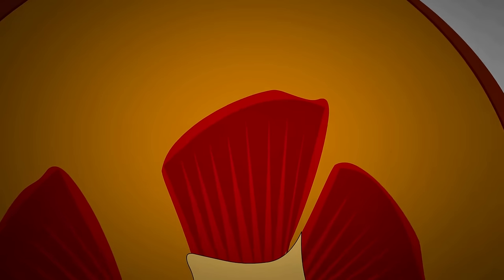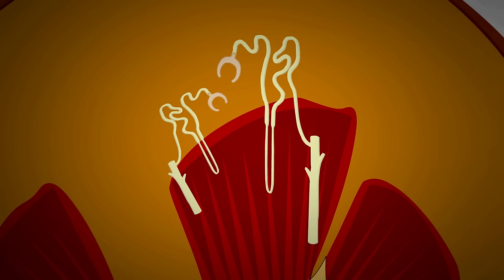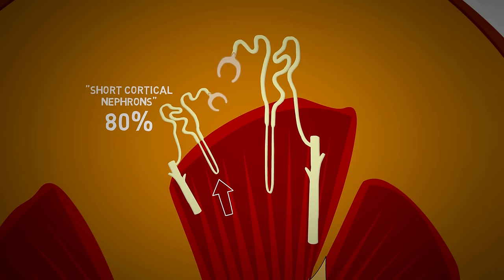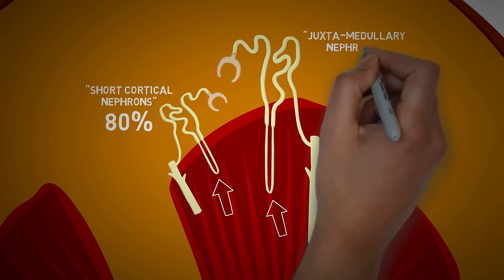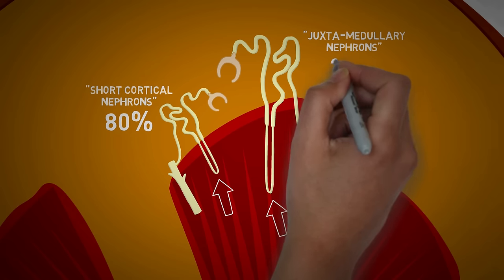Depending upon the length of the loop of Henle, we have two types of nephrons. One type has short loops of Henle and is known as short cortical nephrons — cortical because the major portion is located in the cortex. These comprise about 80% of total nephrons. The other type, juxtamedullary nephrons, have long loops of Henle mostly present in the medulla and make up 20% of nephrons. These two types can concentrate urine up to different osmolarities.